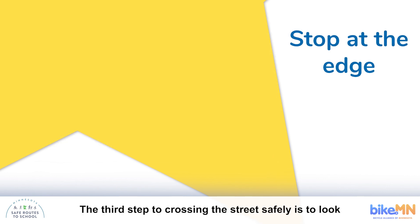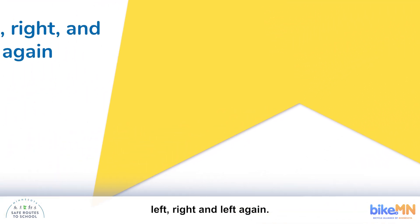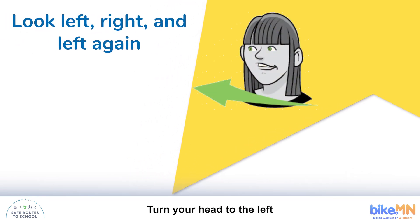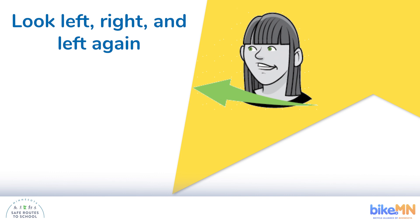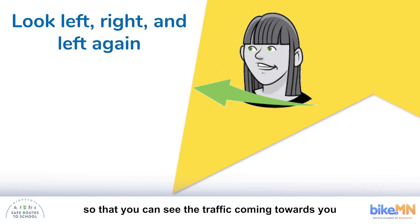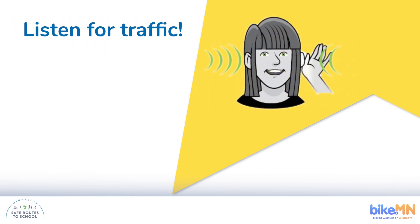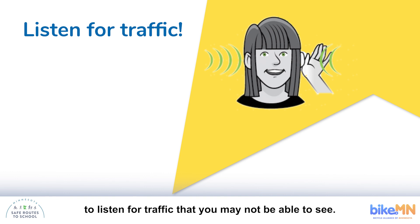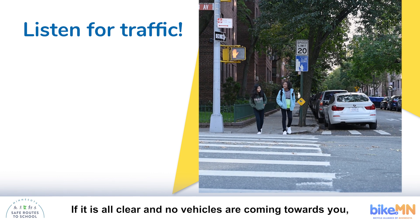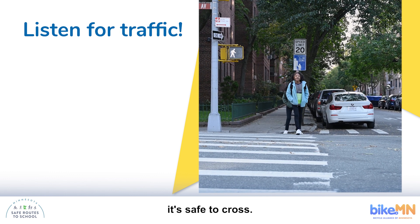The third step to crossing the street safely is to look left, right, and left again. Turn your head to the left so that your chin is all the way over your shoulder. Now do the same thing on the right and then left again so that you can see traffic coming towards you from both directions. Remember to also use your ears to listen for traffic that you may not be able to see. If it is all clear and no vehicles are coming towards you, it's safe to cross.